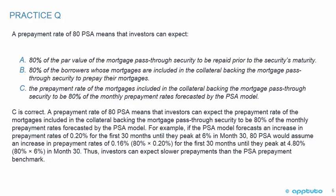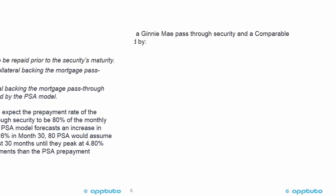The important point to note is that investors can expect slower prepayments than the PSA prepayment benchmark. If it's less than 100, it's going to be slower prepayments than the benchmark.